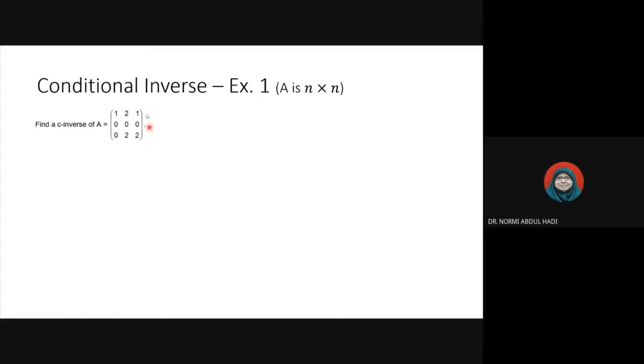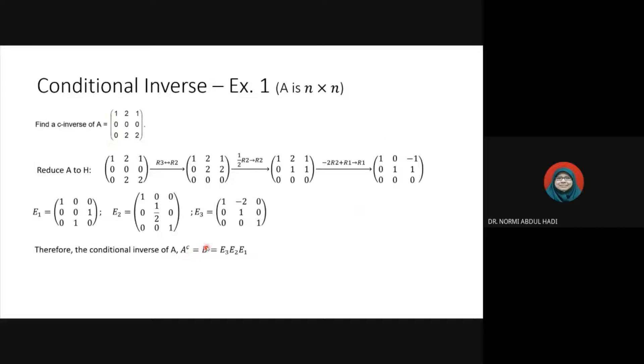First example: we need to reduce this matrix to Hermite matrix. So this is Hermite matrix. B is E3·E2·E1. This is the conditional inverse of A.